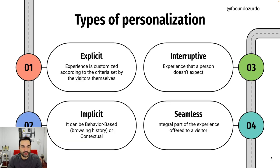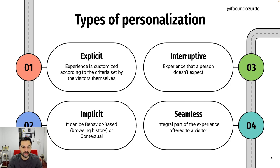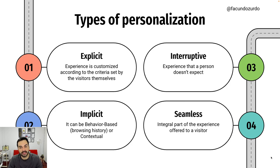If we talk about personalization, we can identify different types. One is explicit personalization, where the experience we are customizing is based on criteria set by the visitors — for example, a form the user fills with details about themselves, or a survey presented to visitors so they explicitly tell us their interests. Different is implicit personalization, where we manage experiences based on the behavior or context of the user — for example, based on the country where a person lives or their previous purchases.